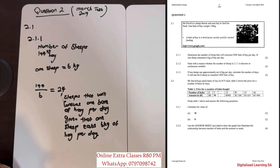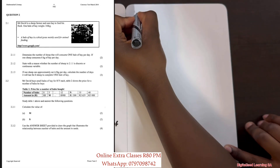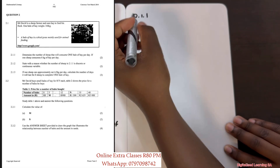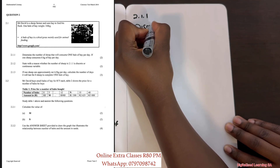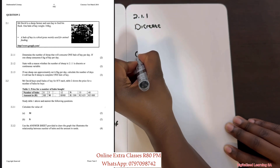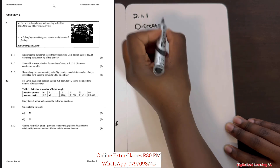Now let's go to question 2.1.2. The question states: state with a reason whether the number of sheep in 2.1.1 is a discrete or continuous variable. To answer this, we first need to understand the difference between the two.